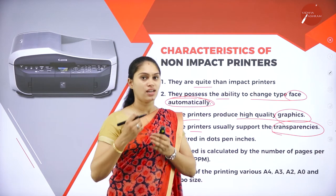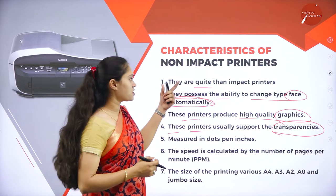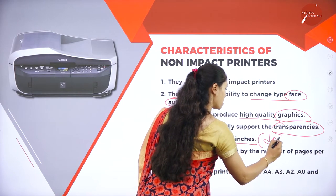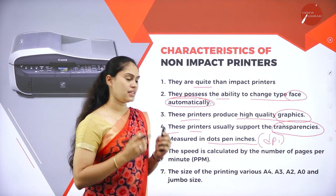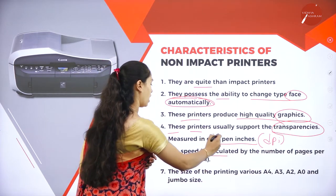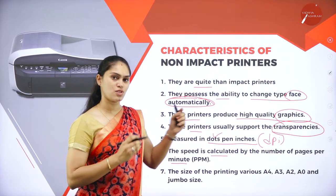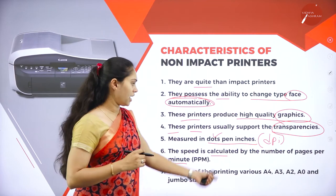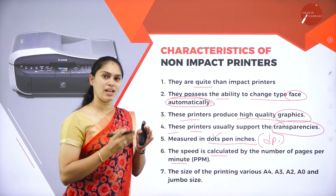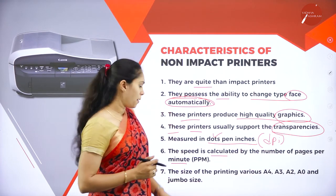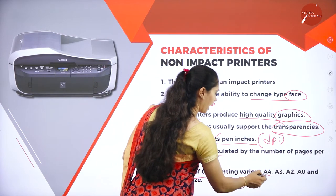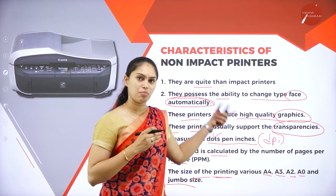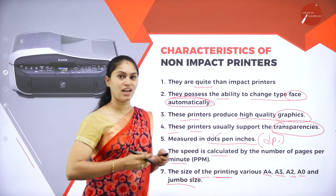Non-impact printers produce high-quality graphics, support transparencies, and their speed is measured in DPI — dots per inch — and PPM — pages per minute. The size of printing varies from A4, A3, A2, A0, and jumbo size. The types of non-impact printer are thermal printer, laser printer, and inkjet printer.